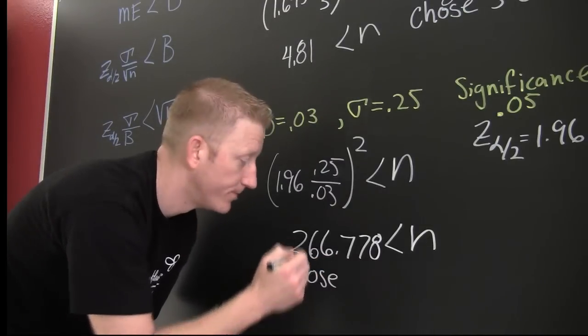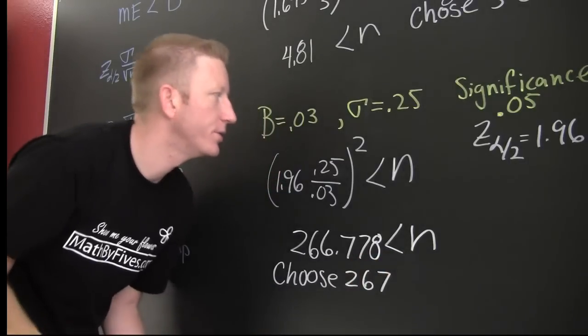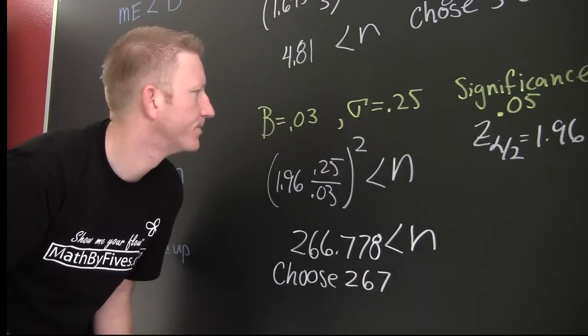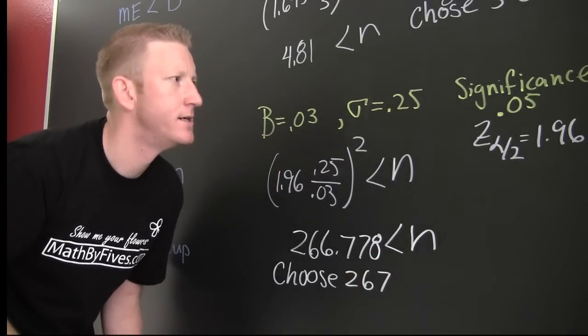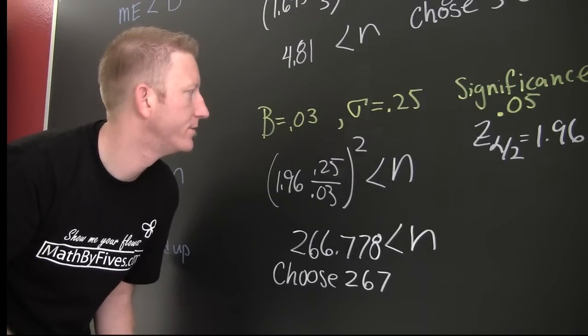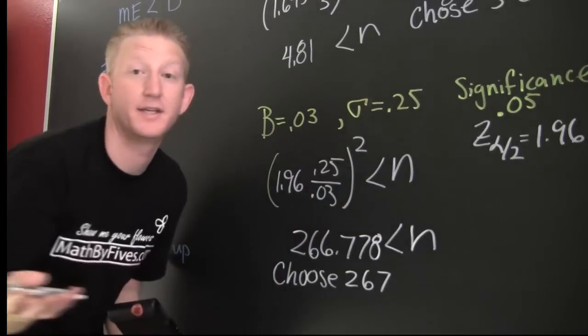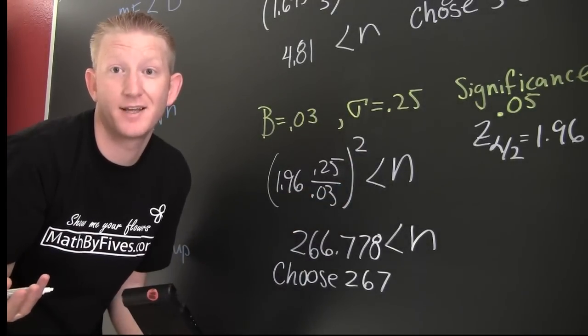Always round up. 267. What would a scenario in something like this be? Maybe you're looking for a population proportion of something that has a usual standard deviation of a quarter.